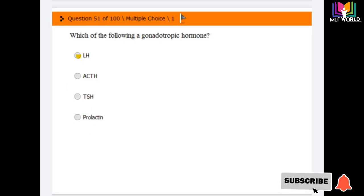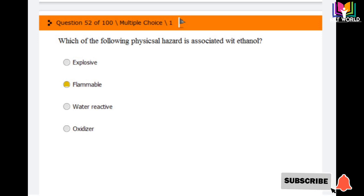Question number 51: Which of the following is a gonadotropic hormone? Options are LH, ACTH, TSH, prolactin. The answer is first option, LH. LH is the gonadotropic hormone.